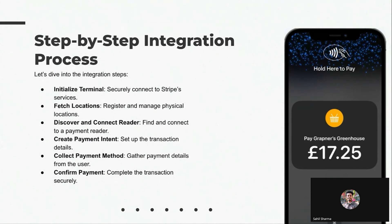After initializing the token, we need to fetch the locations. Before fetching locations, we must make sure we have added and registered the location on the Stripe dashboard to keep track of readers and transactions. Locations can be added either via the Stripe API or directly on the dashboard.